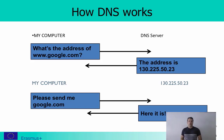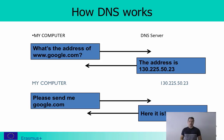The DNS server sends back a reply with the IP address — in this case, 130.225.50.23. Based on that reply, you can then send an HTTP request to that IP address and receive the webpage you want to see. DNS is quite crucial to how the internet works — not only for web browsing, but for all activities where we use domain names that are easy to remember.